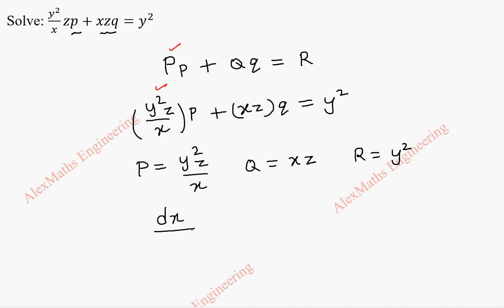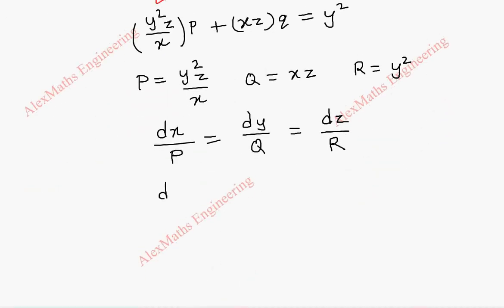To get a solution, we have to solve dx by capital P equal to dy by capital Q equal to dz by capital R. Now, substituting, we get dx by y square z by x. Then dy by x, z. Then dz by y square.